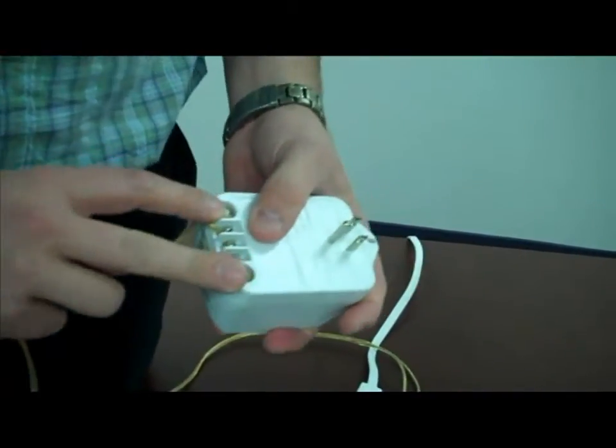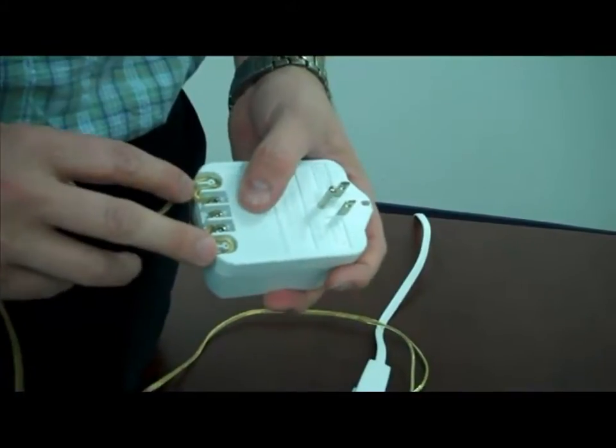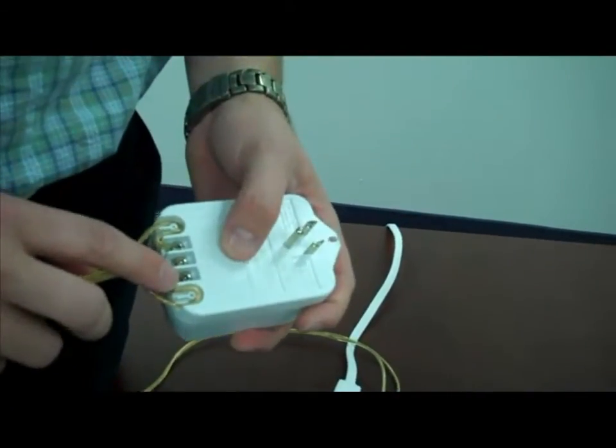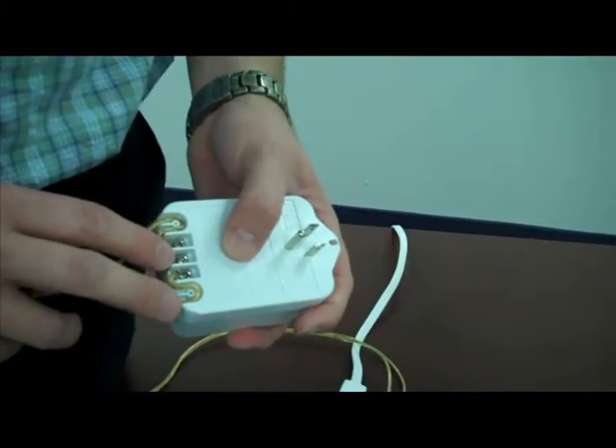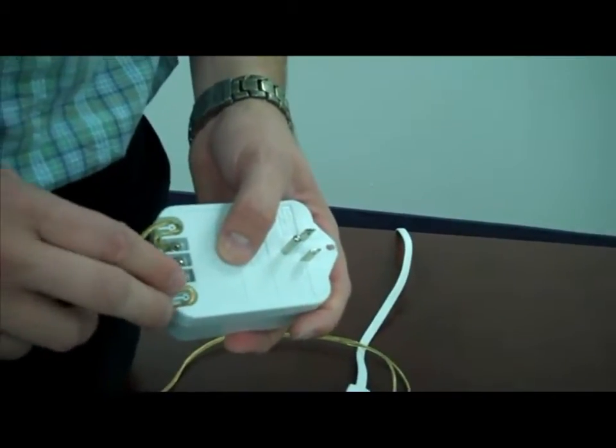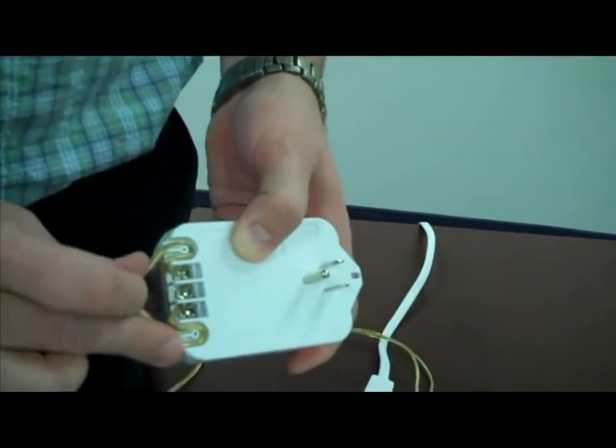Underneath here, we have a couple of different features. First of all, we've got where the AC is going to come out. We also have a grounding terminal in case you need to ground the panel or whatever you're wiring into. We have strain relief down here.